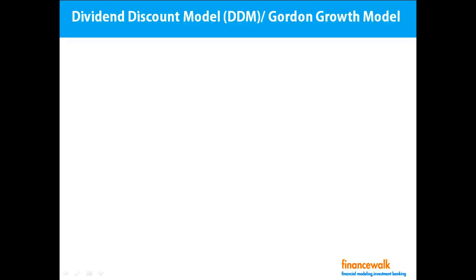We'll first see Dividend Discount Model — DDM or Gordon Growth Model. It is a model for determining the intrinsic value of a stock based on a future series of dividends that grow at a constant rate. Given a dividend per share payable in one year and the assumption that the dividend grows at a constant rate in perpetuity, the model solves for the present value of the infinite series of future dividends.